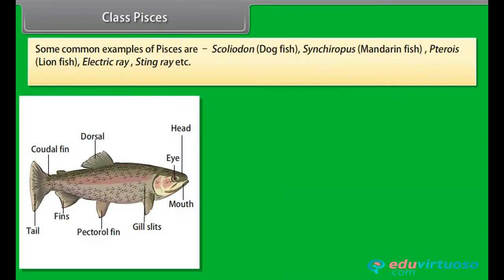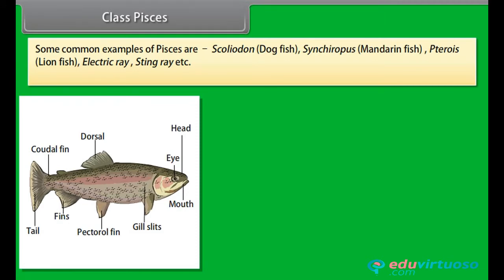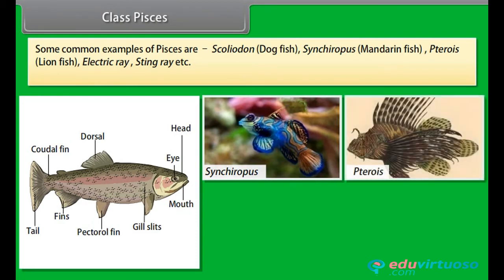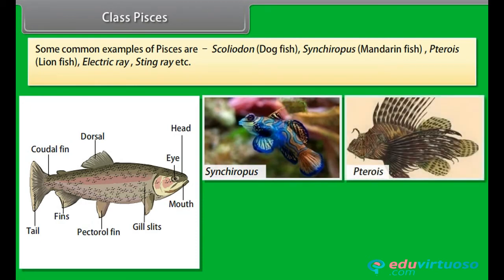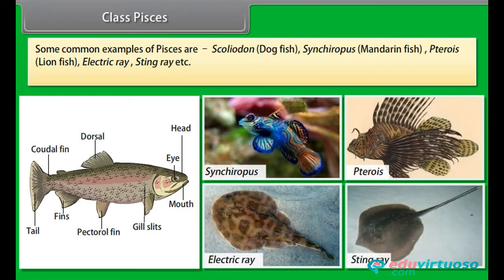Some common examples of Pisces are Scoliodon, dogfish, Synchiropus, mandarinfish, Pterois, lionfish, Electric Ray, Stingray, etc.